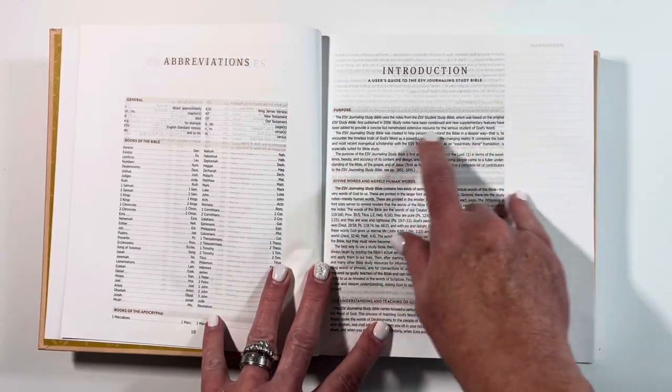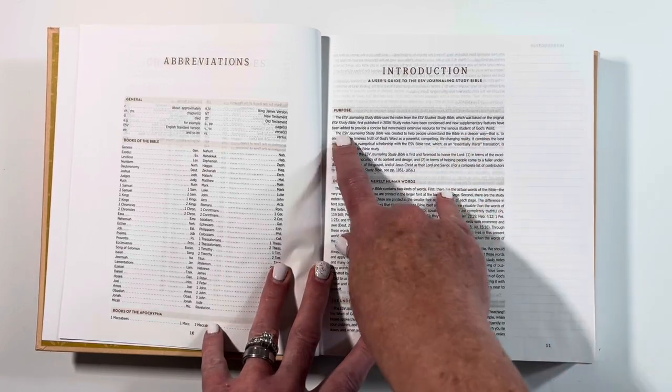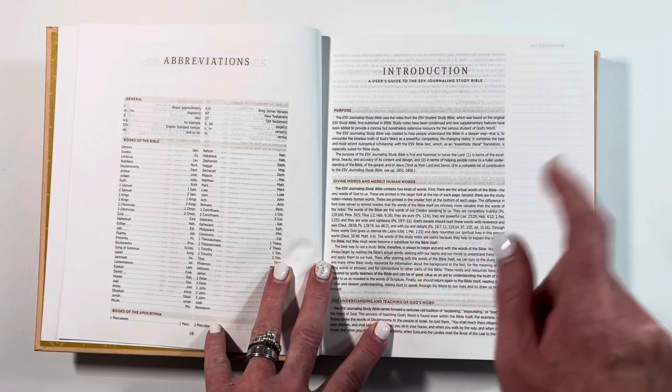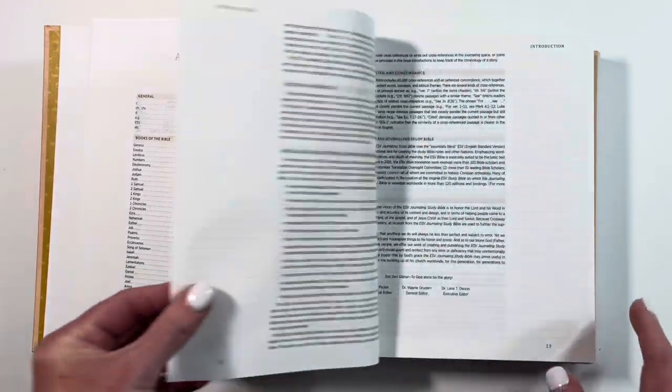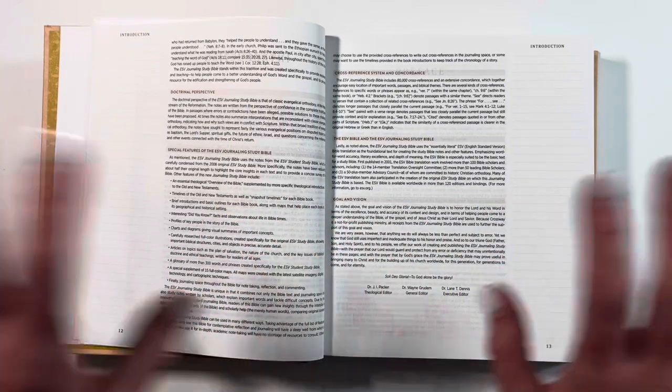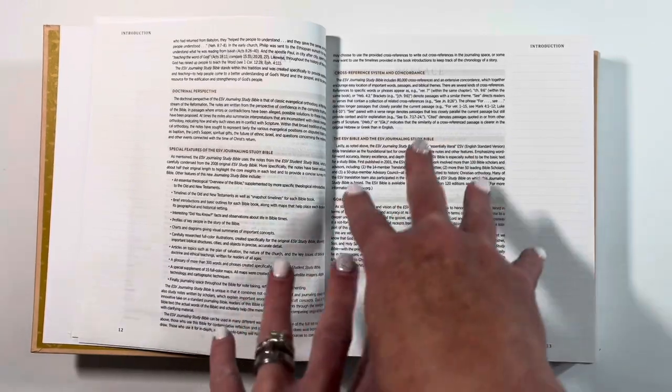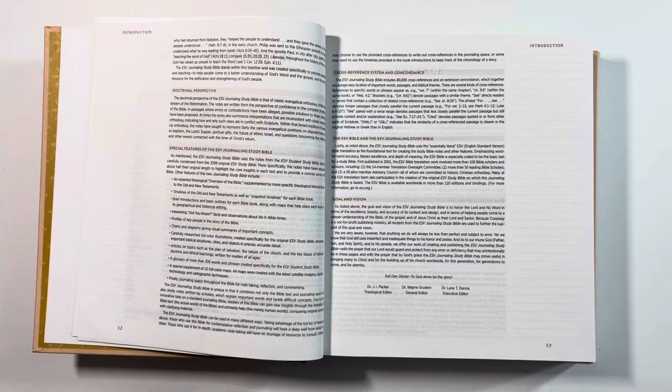And it says study notes have been condensed and new supplementary features have been added to provide a concise but nonetheless extensive resource for the serious student of God's work. So I like that. So we're taking a lot of features from both of the original Bibles and making it into this one to where we can have access to study the word in addition to our journaling.